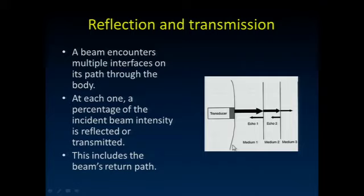In reflection and transmission, the beam encounters multiple surfaces: a small amount is reflected back at each interface, and the majority continues on to the next interface, and that process repeats.